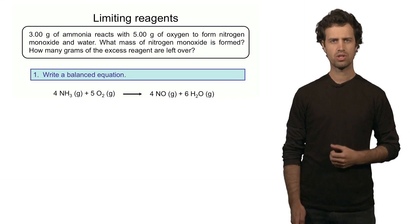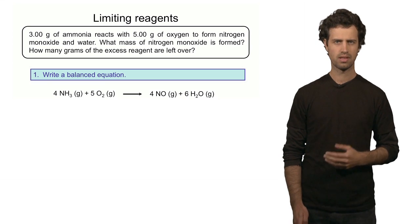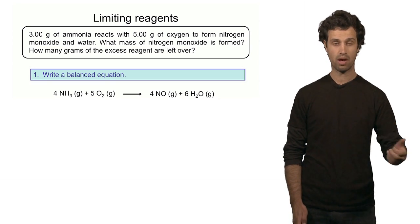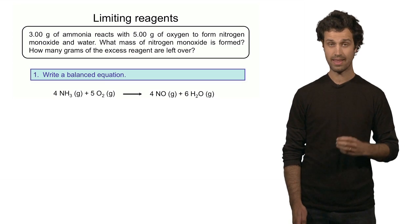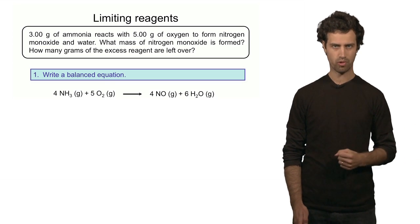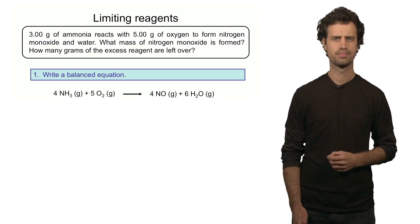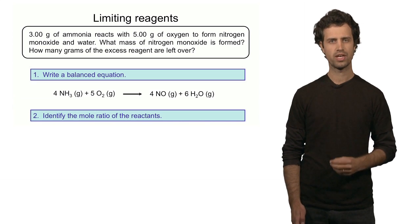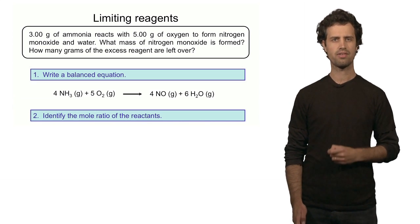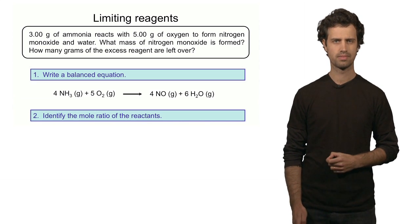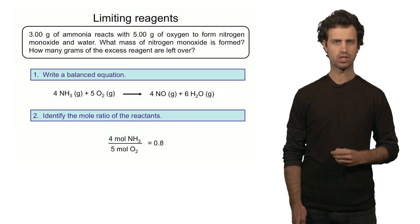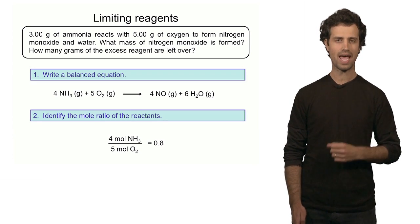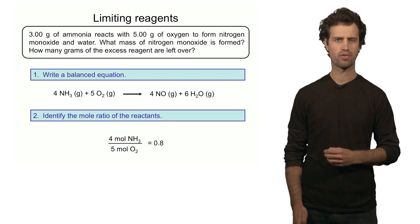The next step is to determine the limiting reagent. To do that, we have to calculate first the balanced mole ratio and then the actual mole ratio, and then compare the two. The balanced mole ratio we get directly from the chemical equation. The reagents are ammonia and oxygen, and their ratio is 4 to 5, so it's 0.8. This is the balanced mole ratio.